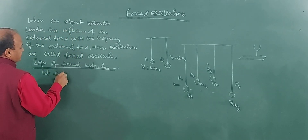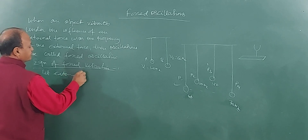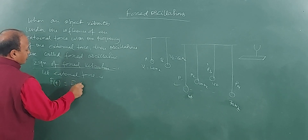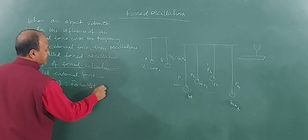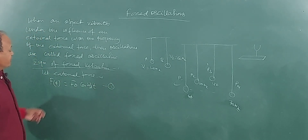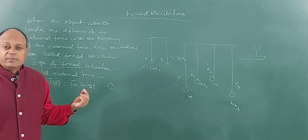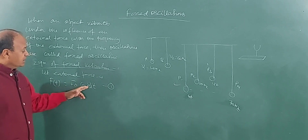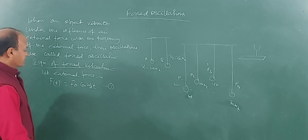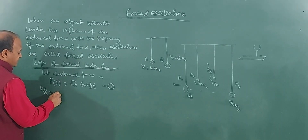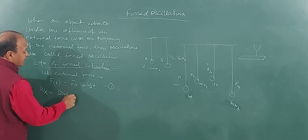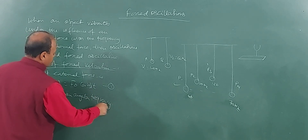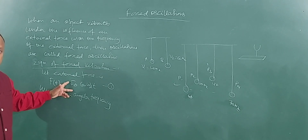Let the external force be F(t) equals F₀ cos(ωd·t). I use F(t) because it is a periodic, time-dependent force. F₀ is the maximum force. Omega d is the driven angular frequency — the driven frequency of the external force. F₀ is the maximum amplitude of this force, and it follows a cosine function.